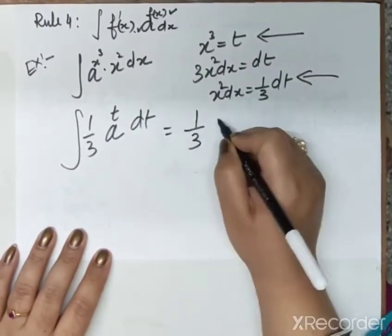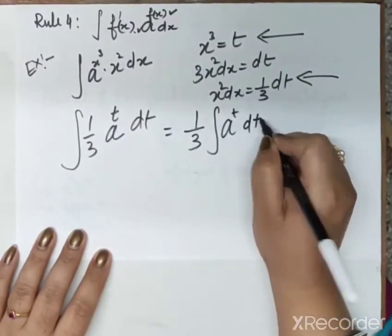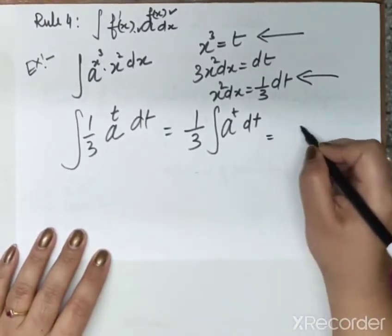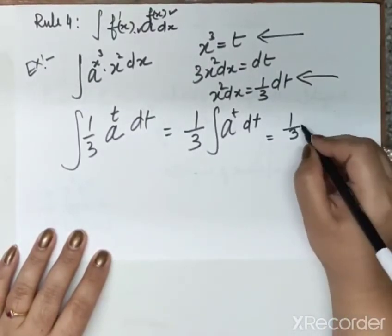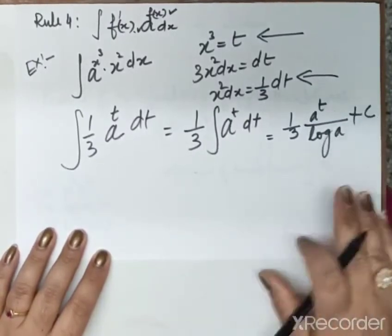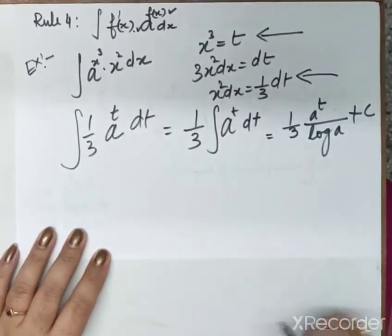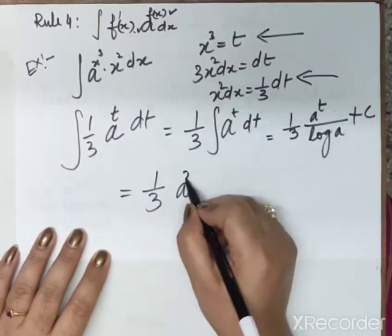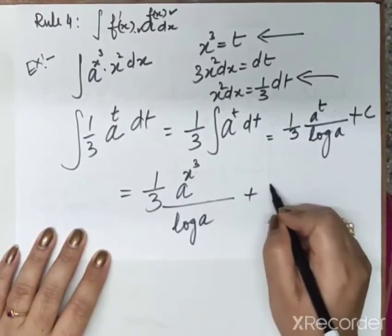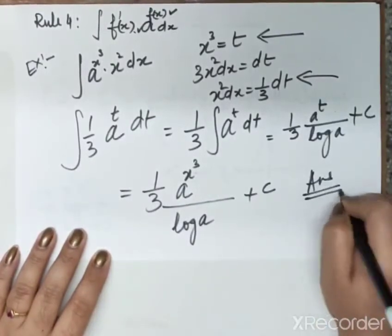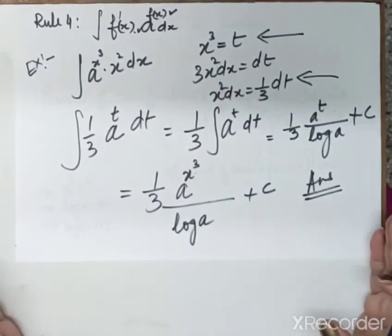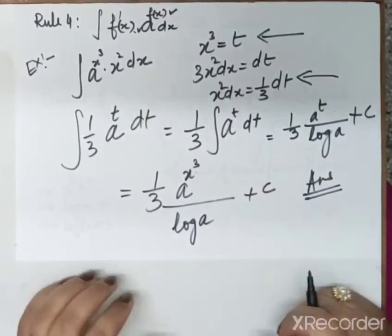First step: x³ = t, then derivative: 3x² dx = dt, so x² dx = (1/3) dt. Substituting, we get (1/3) ∫ a^t dt. We know that ∫ a^t dt = a^t / log(a), so the answer is (1/3) · a^t / log(a) + c. Substituting back t = x³, the final answer is (1/3) · a^(x³) / log(a) + c.